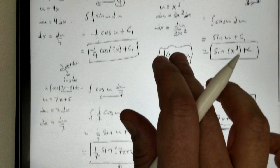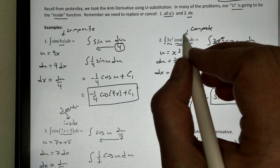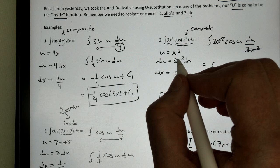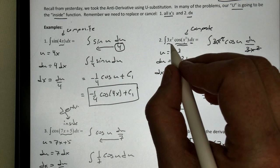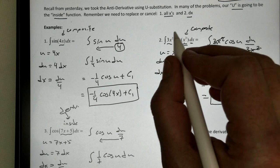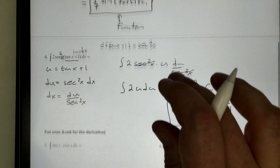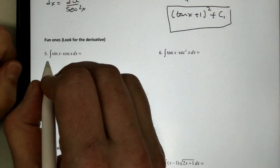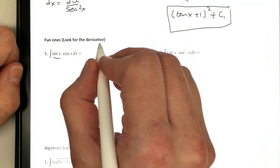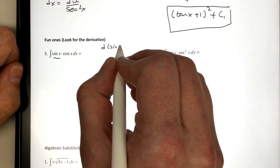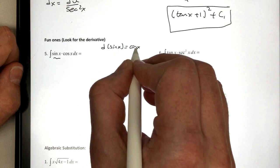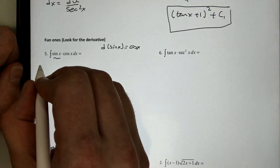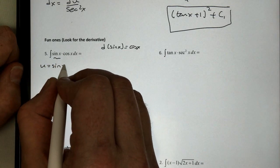When we saw our example on number two, we let u be the inside function, this x cubed. Its derivative was three x squared, which was our outside function. I can use the same idea to help answer a problem like number five. If I look at sine of x, I know that the derivative of sine of x is cosine of x. Now, what does that mean for me? Well, let's see what happens if we let u equal sine of x.